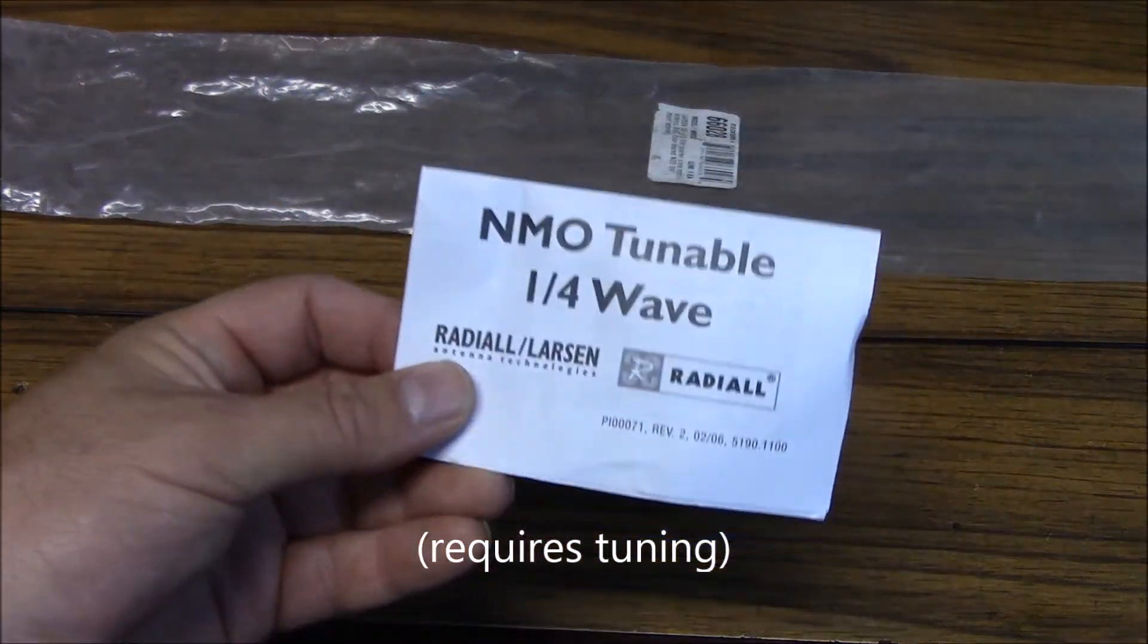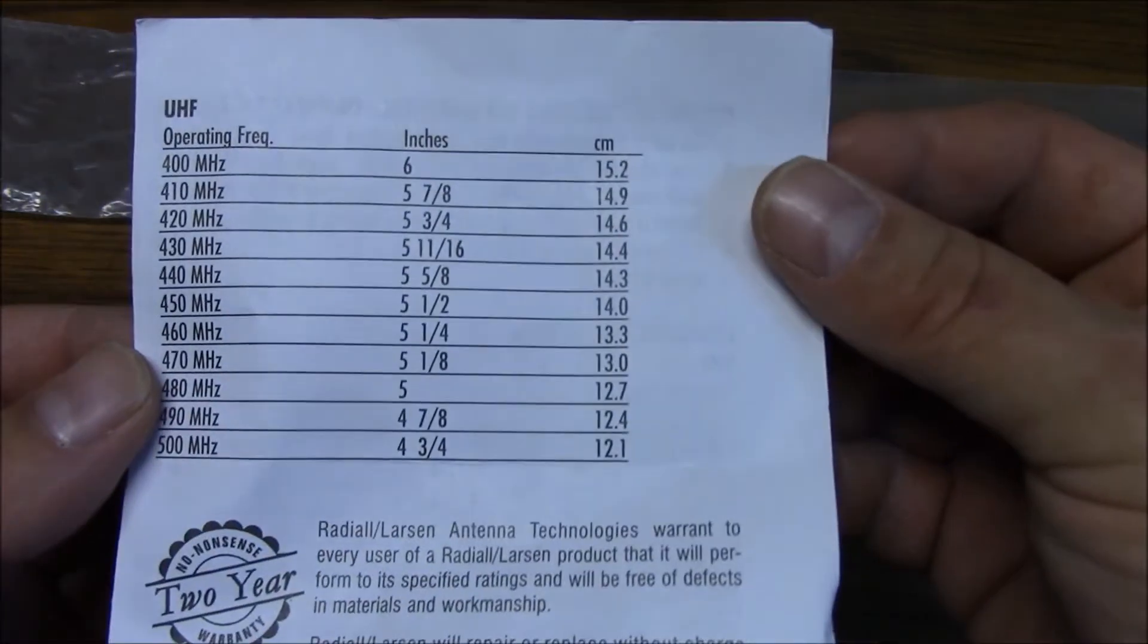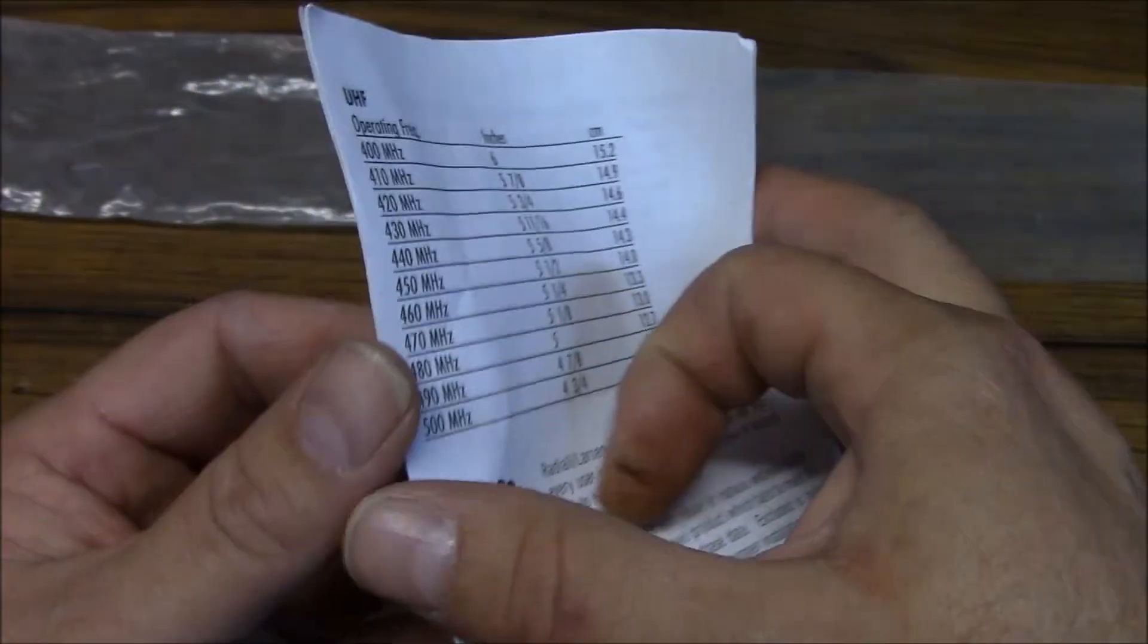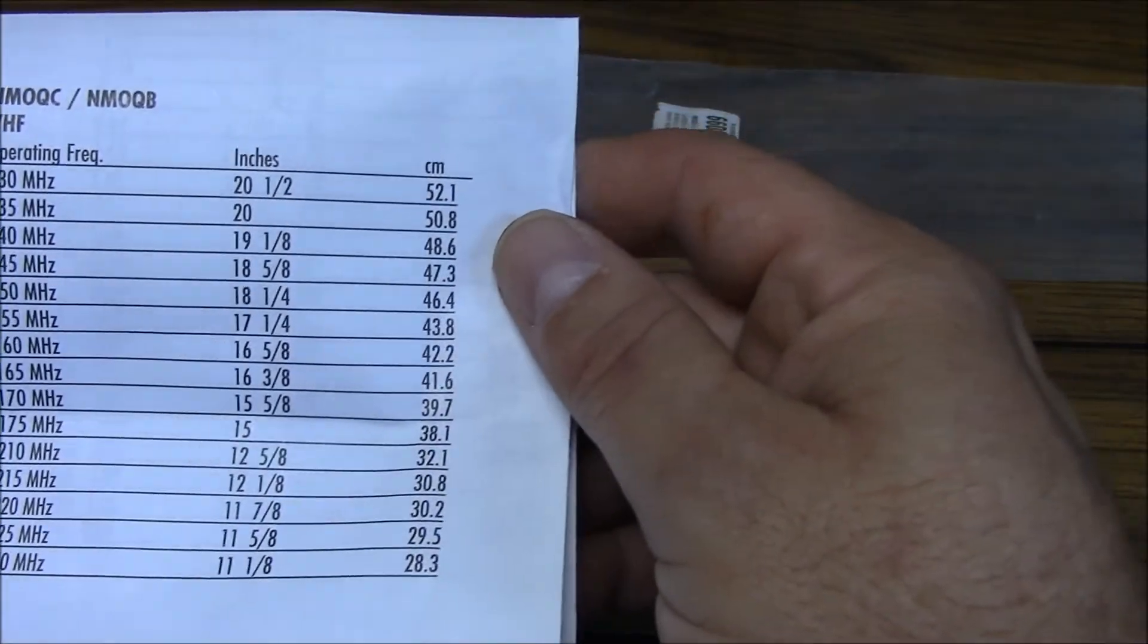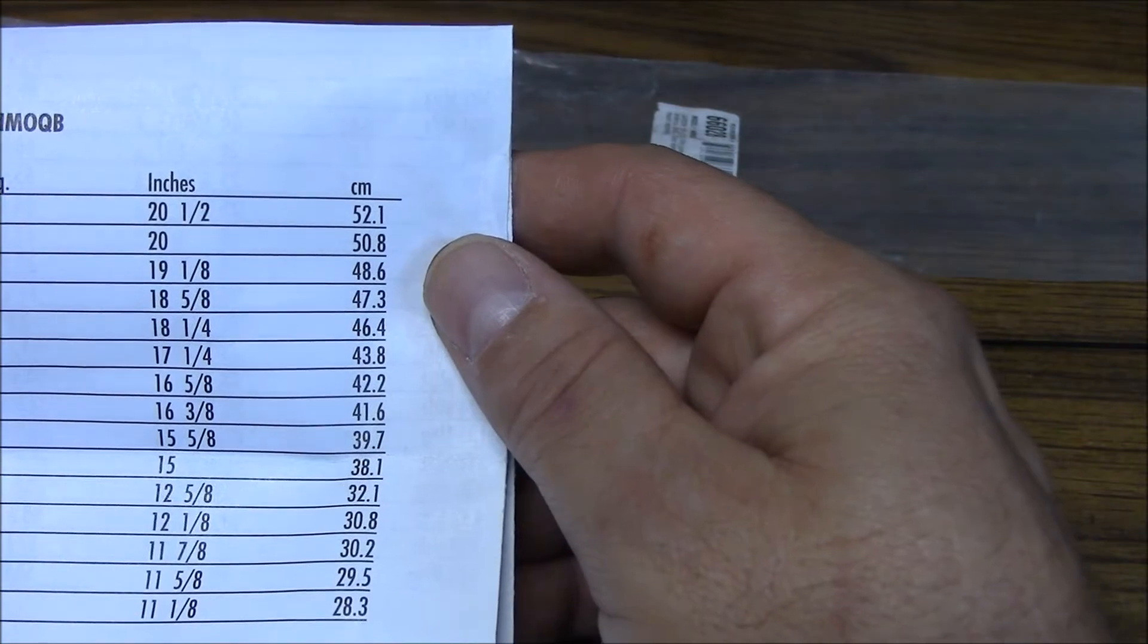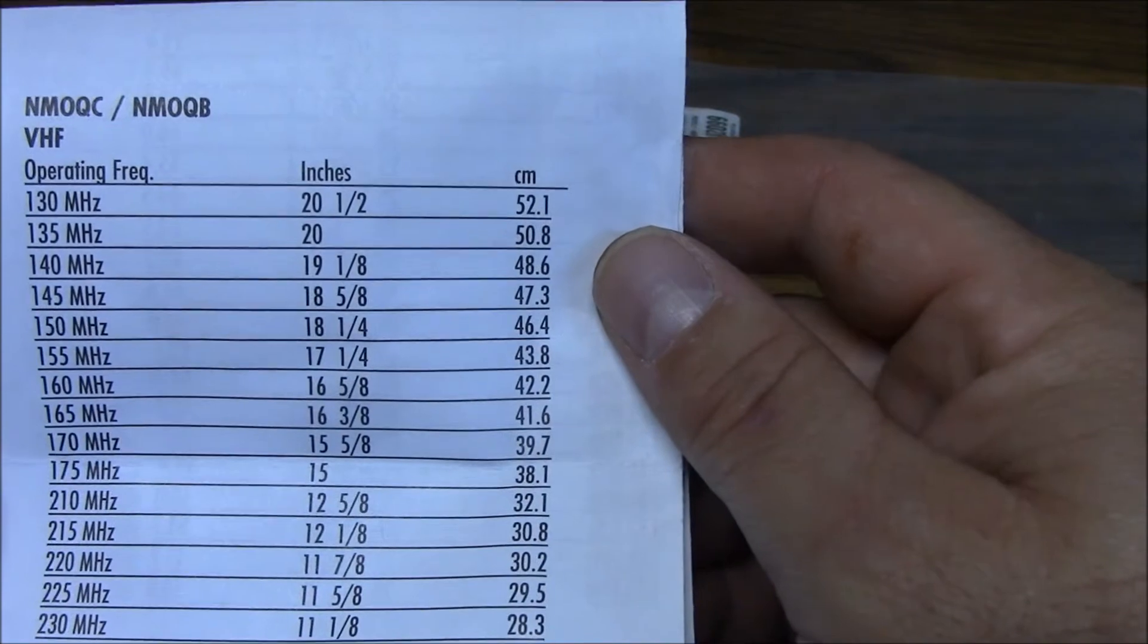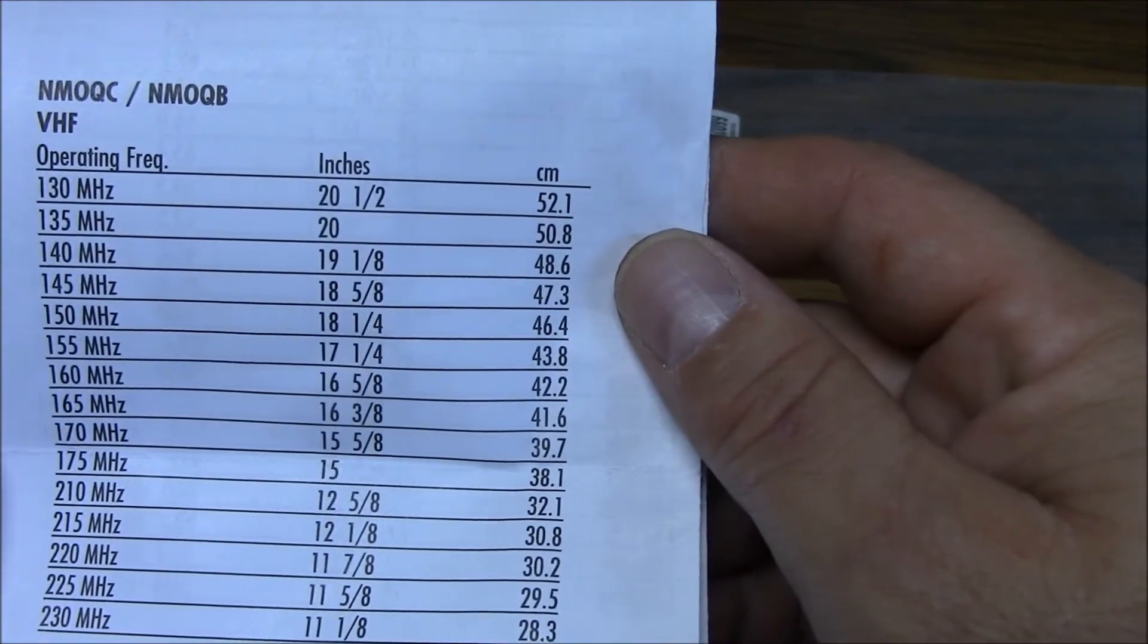Sometimes we don't like to read the instructions but here's the instructions here and this gives you a cut chart. If we're going to cut this for UHF, you can see the length that we're going to want to cut it to here and I'm going to cut this one for VHF. So if we look right here on our chart we can see that it's 18 and 5 eighths for 145 megahertz. I prefer to cut these things a little bit long and I prefer to cut them for the top of the band. So I'm going to cut this thing for about 18 and a half inches. Let's go ahead and get started.